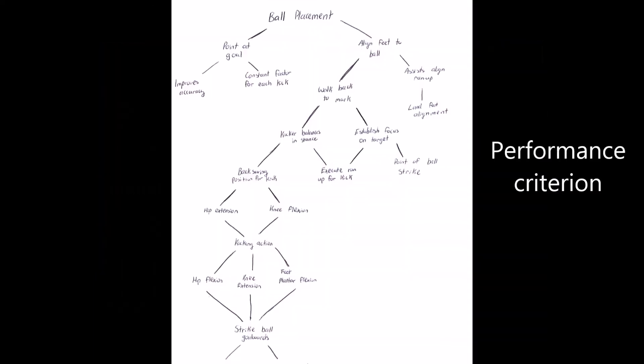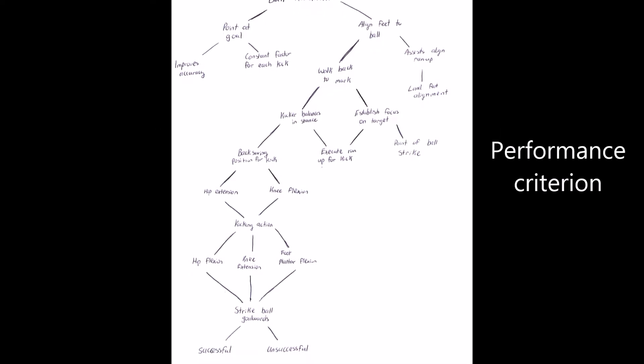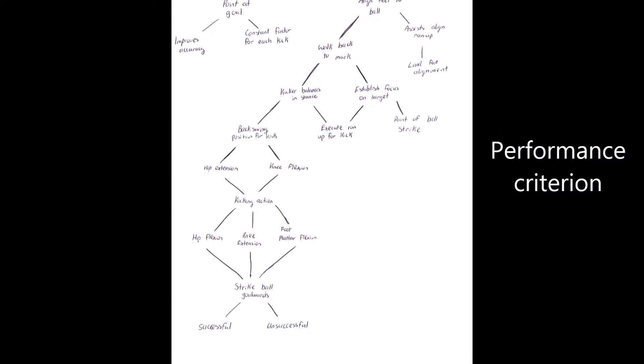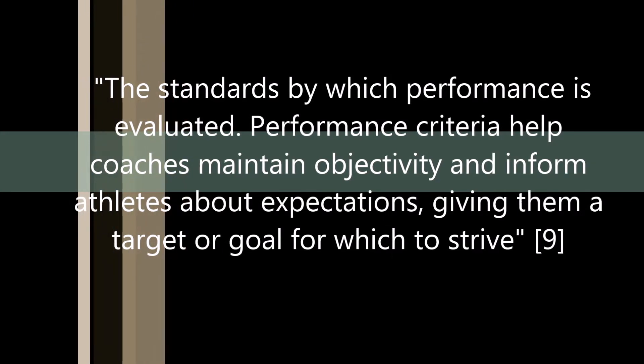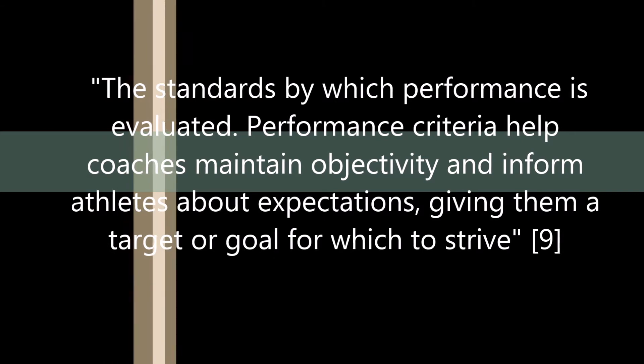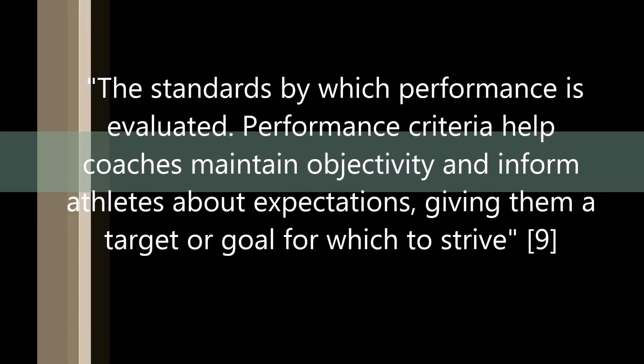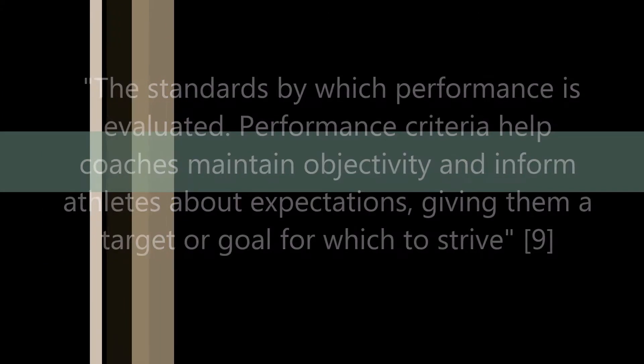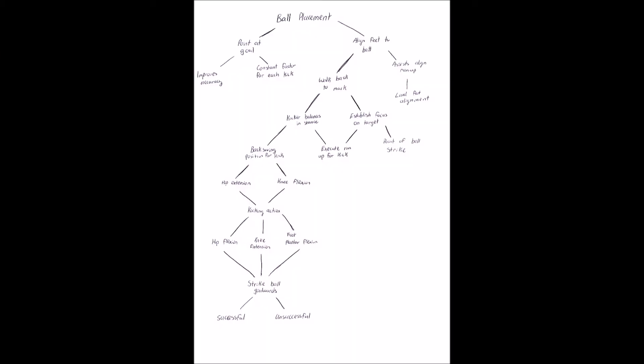To understand the important aspects of what it takes for a rugby conversion to be deemed successful, we must break it down into each of its individual segments. This breaking down of the movement pattern is referred to as performance criteria, which can be defined as the standards by which performance is evaluated. Performance criteria helps coaches maintain objectivity and inform athletes about expectations, giving them a target or goal to strive for. The movement starts from the point where the ball is placed upon the tee through to when the ball is kicked. The criterion includes all aspects of the kick: the initial alignment of the feet, establishing a kicking position, the backswing and kicking phases, as well as the flexions and extensions through the hip, knee, and ankle joints. Each of these aspects must be executed correctly as they all work in correlation with each other to produce a well-performed kick.